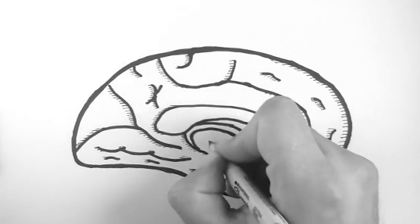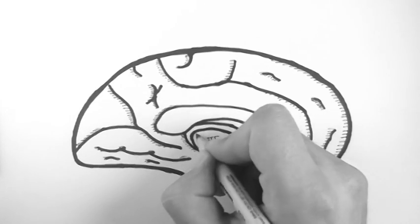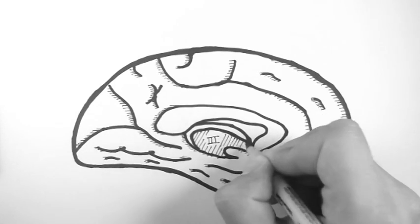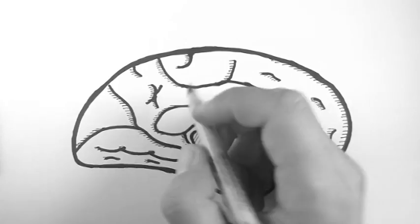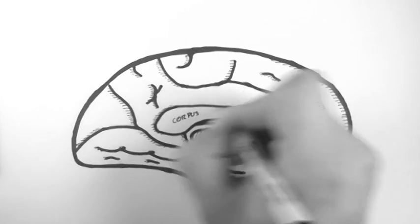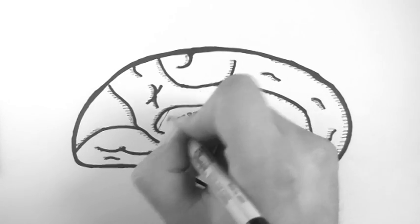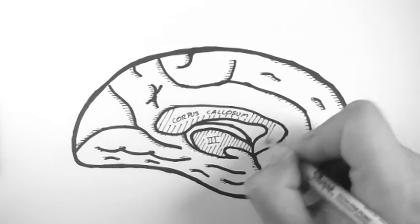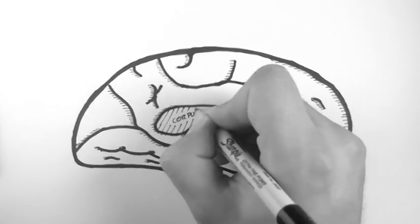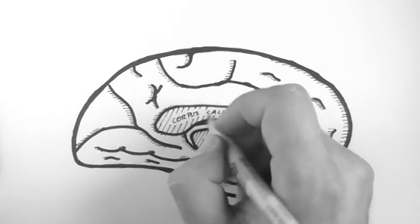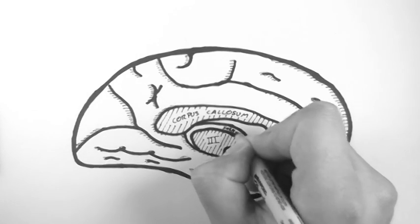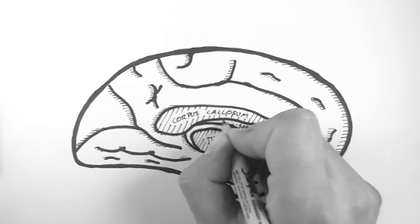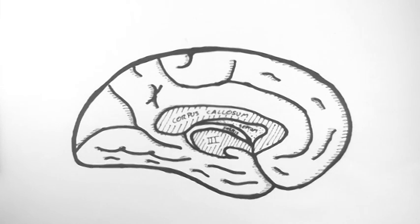But first, I'll start off by labeling the third ventricle here in the center. And here is a large white matter tract that connects the two hemispheres of the brain known as the corpus callosum. Now above the third ventricle is the fornix, which is a smaller white matter tract. And then between that and the corpus callosum is the septum pellucidum. And that lies between the two lateral ventricles.